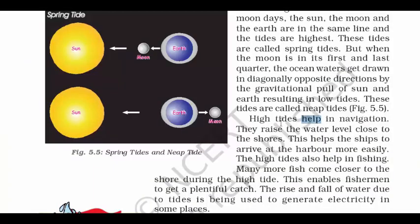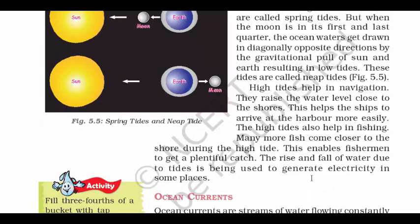Some advantages of high tides: they help in navigation, as the rise in water helps ships arrive at the harbor more easily. They also help in fishing — when there are high tides, fish get thrown towards the shore, making it easier for fishermen to catch them. More practically, the rise and fall of water due to tides is being used to generate electricity in some places.